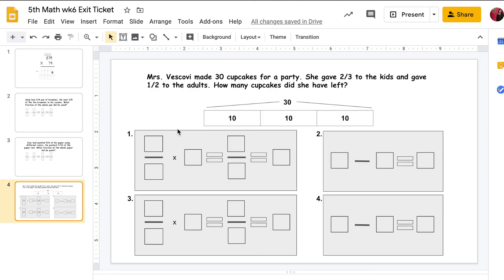Finally, this is the last slide. It says, Mrs. Viscovi made 30 cupcakes for a party. She gave two-thirds to the kids and gave one-half to the adults. How many cupcakes did she have left? I have the tape diagram for you. You're going to fill in the fraction and the whole number. You're going to solve it. Then you're going to do the subtraction. Then you're going to move to step three. Again, fill in the fraction and solve it. And then you're going to subtract. Okay?